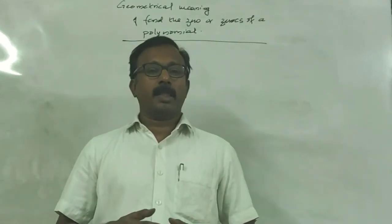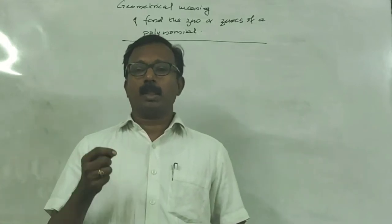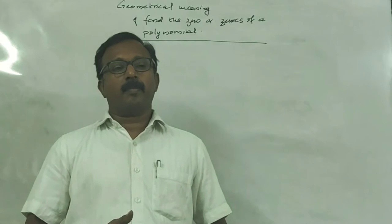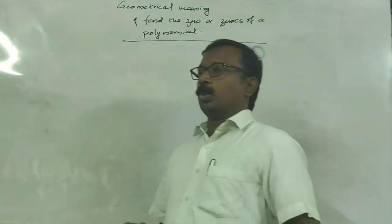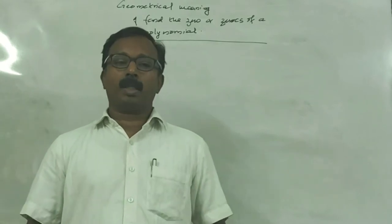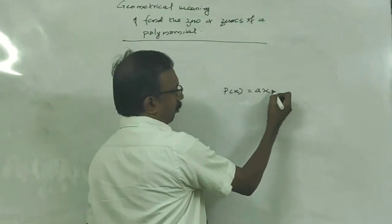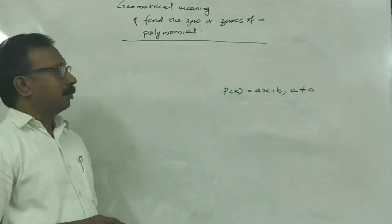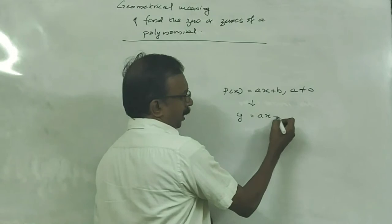A linear equation means its graph is a line. The graph of a linear equation is a line. We cannot draw the graph of a polynomial directly, so we convert the polynomial into a function. For a polynomial P(x) = ax + b, where a is not equal to zero, we draw the graph of y = ax + b.